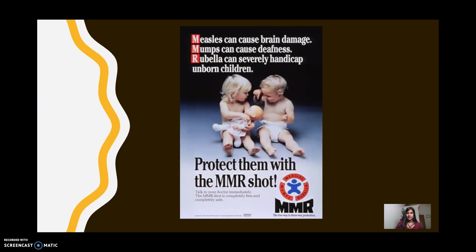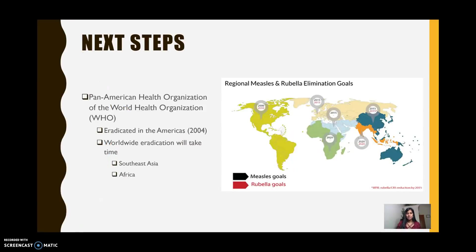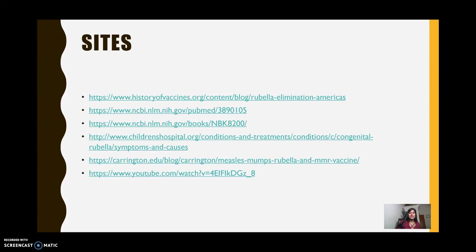This flyer shows the importance of the MMR shot. The rubella virus has been eradicated from the Americas since 2004, but worldwide eradication will take time. The WHO recognizes this, and the next goal is to eradicate it from other regions like Southeast Asia and Africa. And that concludes this presentation — thank you.